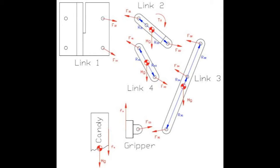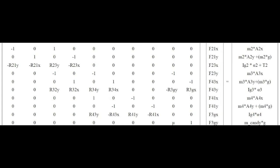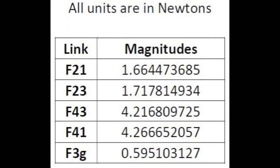Next, we have our free body diagram, which is showing all the forces that's acting within the claw. Here's our variable matrix that corresponds to the sum of the forces in the x and y direction, and also the sum of the torques equaling I alpha. Here are our solved forces from the matrices.